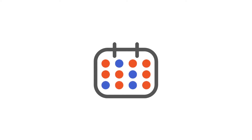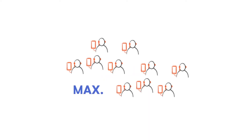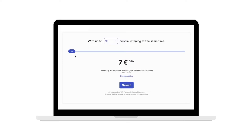Within the booked time frame, you can run as many events as you want without any extra cost. It's a flat fee. The price depends on the maximum number of concurrent listeners — it just depends on how many listeners will be listening at the same time. Just use the slider to adjust it to the number you need.